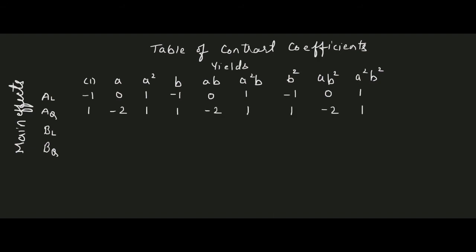Similarly, we find the coefficients for the linear effect of B. Any treatment combination that does not contain B has coefficient -1; if it contains B, the coefficient is 0; if it contains B², the coefficient is +1. So 1, A, A² do not contain B: coefficients are -1, -1, -1. B, AB, A²B contain B: coefficients are 0, 0, 0. B², AB², A²B² contain B²: coefficients are +1, +1, +1. For the quadratic effect of B, if a treatment combination contains B the coefficient is -2, otherwise +1.